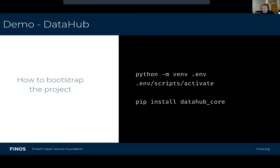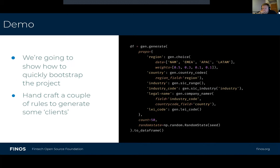I was hoping to demo this today, but unfortunately my main desktop PC has died and blue-screened, so I'll walk you through it instead. With DataHub, it's Python-based — anyone who knows Python can do pip install datahub-core to bring down the library. To handcraft some rules in a similar way to DataHelix, if you wanted to create a set of accounts, you could say you want a region, provide some data to choose from with weights. DataHub has inbuilt types for things like countries, currencies, and similar things, so it already understands what they are.